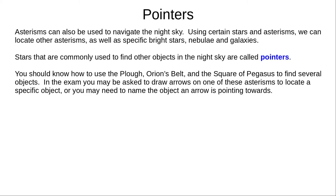Asterisms can also be used as celestial landmarks to help us navigate the night sky. We can use well-known stars and asterisms to locate other asterisms, specific stars, nebulae, and galaxies. Stars that are commonly used to find other objects are called pointers, or pointer stars. You should know how to use the Plough, Orion's Belt, and the Square of Pegasus to find several objects.